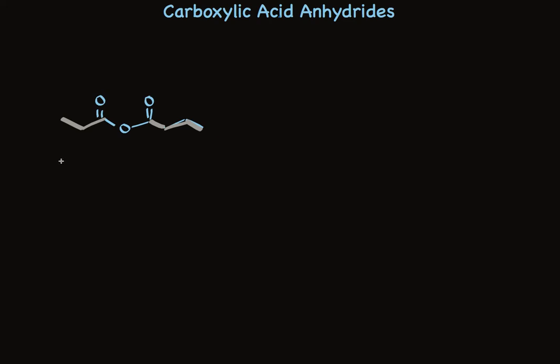So we have butyric, propionic, anhydride. The name is three words. Using the systematic nomenclature we'd call this butanoic, propanoic anhydride.